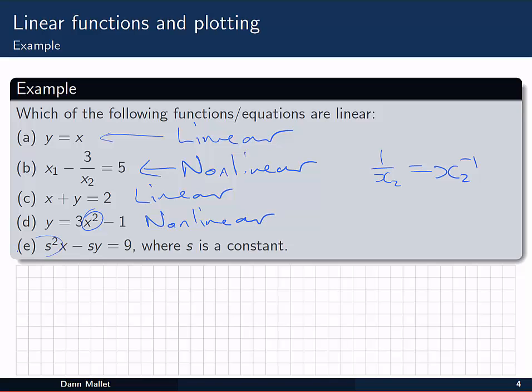Now E also has a square in it, s squared. So it looks immediately like it's going to be non-linear. We've got this little note at the end that s is a constant. So if s is a constant, that's just going to be a number as well. So it's a constant multiple of x, take away a constant multiple of y equal to 9. So that one is linear. And what I'm going to do is add a little note at the end to say in x and y, just to emphasize that we're talking about x and y being the variables and not s.